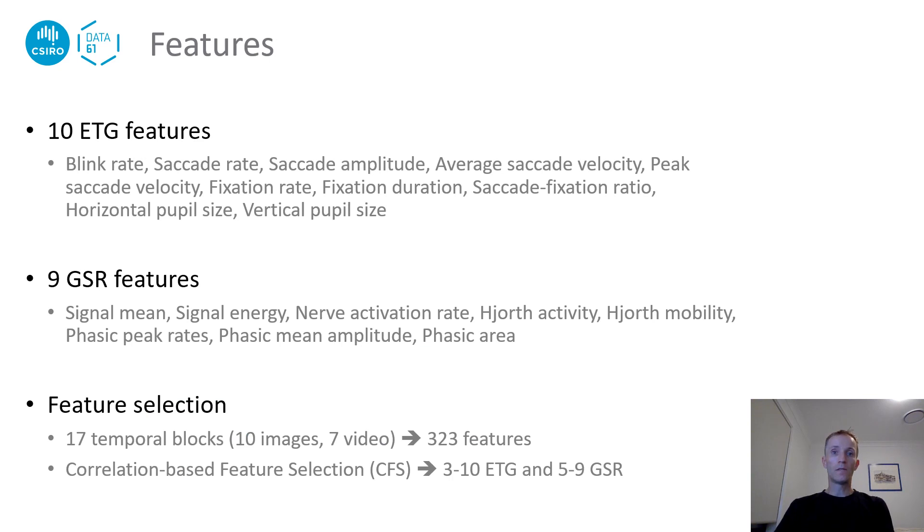Moving to the data analyses, we extracted 10 ETG features and 9 GSR features. With well over 300 features in total, there was a risk of overfitting in machine learning models, so we applied correlation-based feature selection. CFS basically favors features that are highly correlated with the class label, hence very informative for the predictions, but which are weakly correlated with other features, hence limiting redundant information. CFS was applied to each individual trait, dropping the number of features by more than 90%.